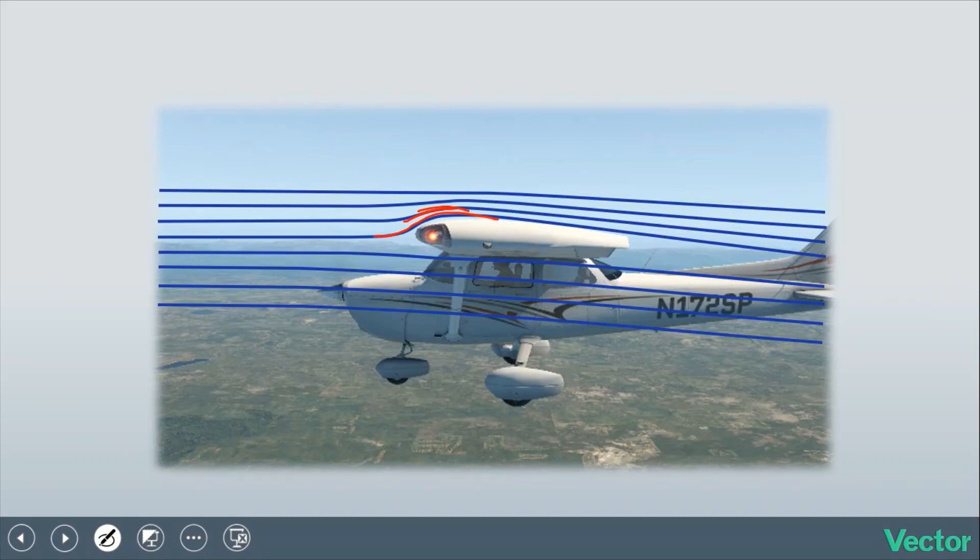So what winds up happening is we have this area of lower relative pressure form just above the upper surface. Lower relative pressure meaning lower than everywhere else surrounding it. So the air underneath the wing is at a higher relative pressure than the air over the upper surface of the wing. High pressure always pushes towards low pressure and that produces lift.